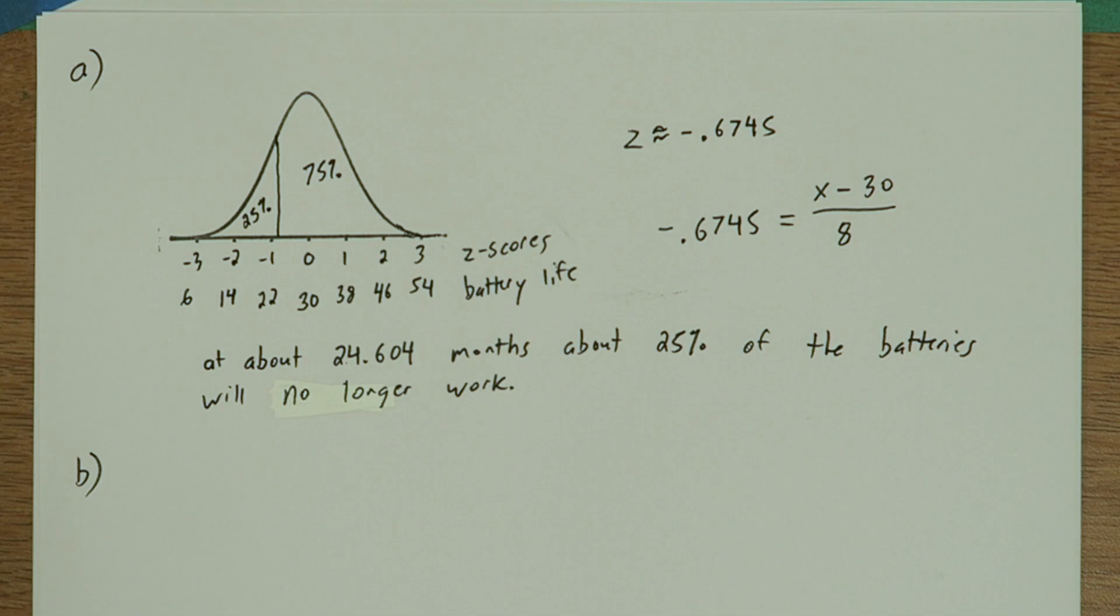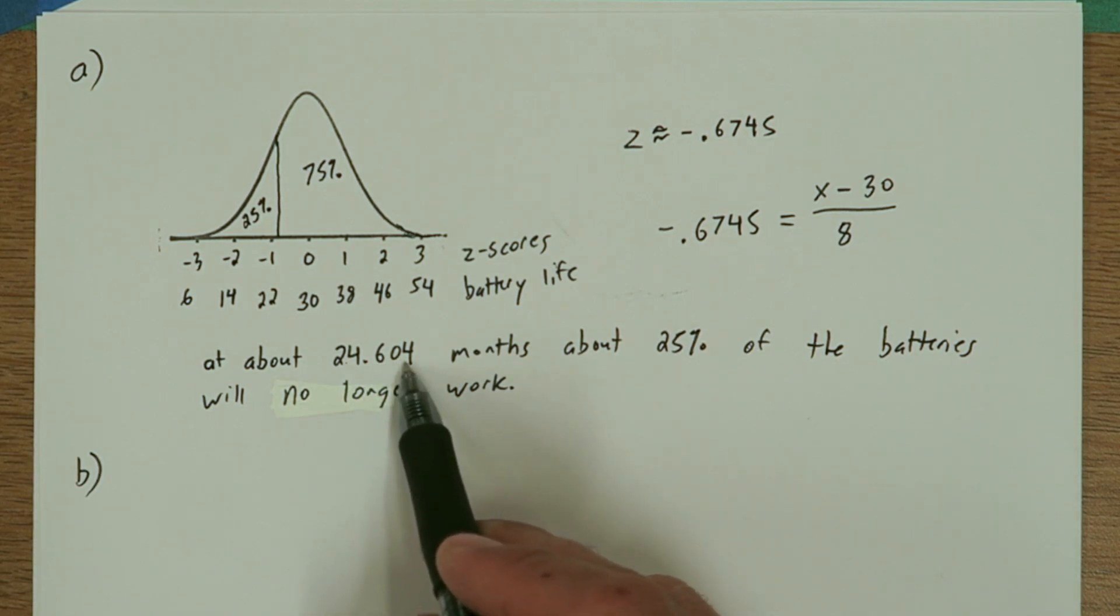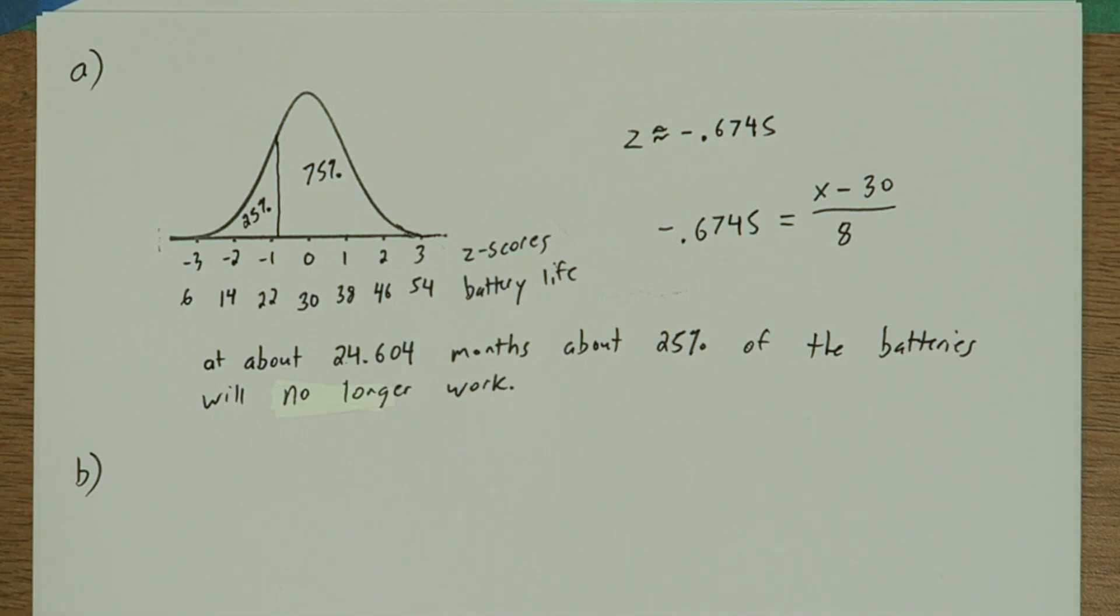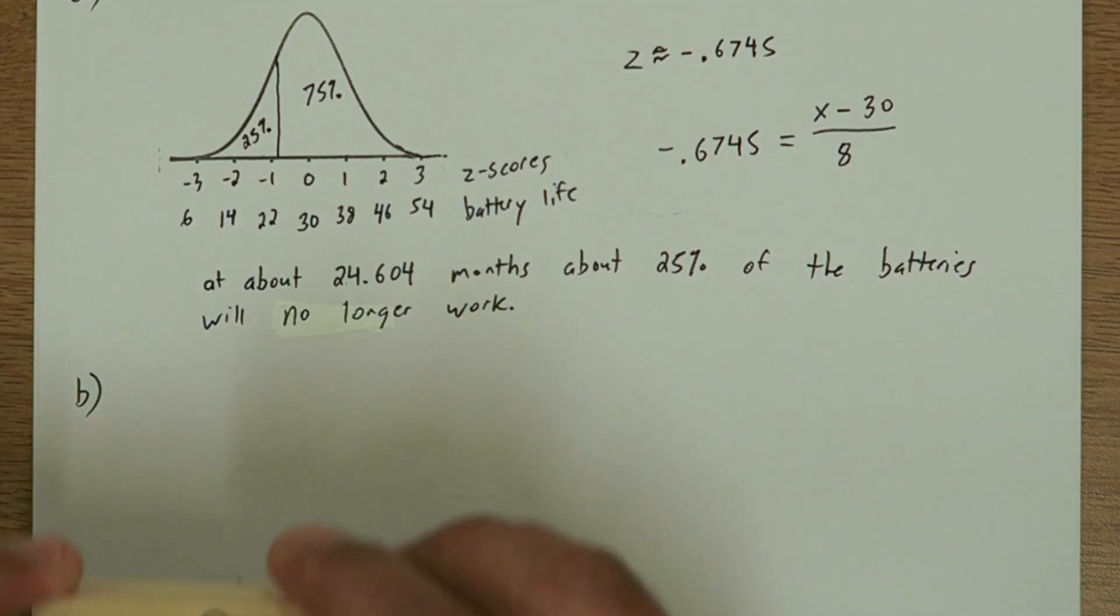In part B, we want to find the probability a customer's battery will last less than 24 months. Now at 24.604 months, we know about 25% of the customers' batteries won't last. So the probability we're finding is going to be pretty close to 0.25, but it's going to be a little different because we want to use 24 exactly as our cutoff.